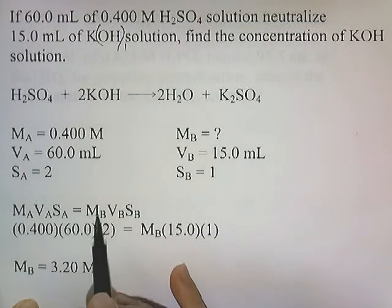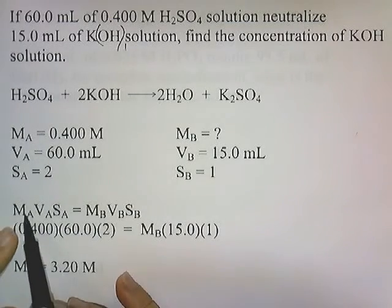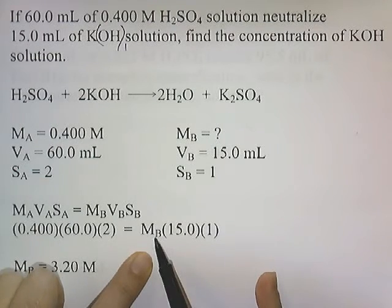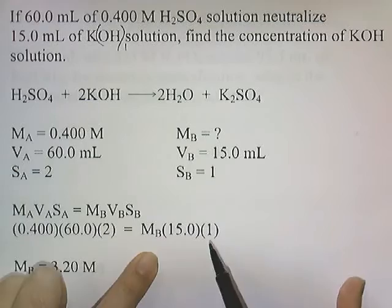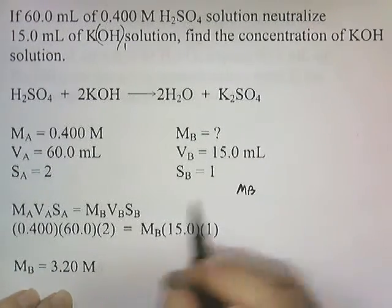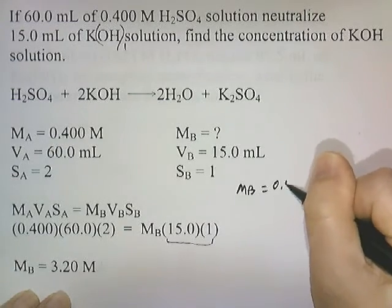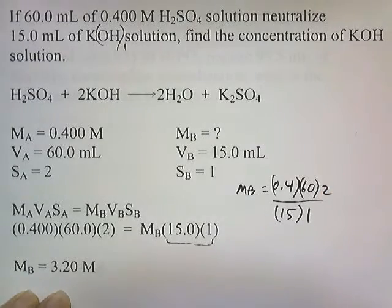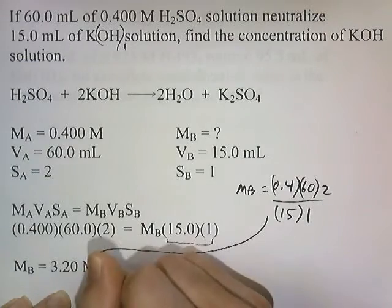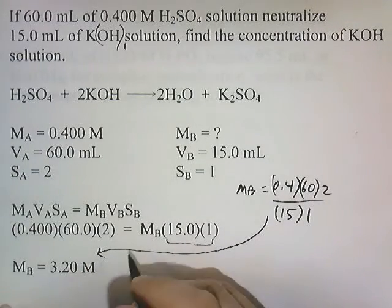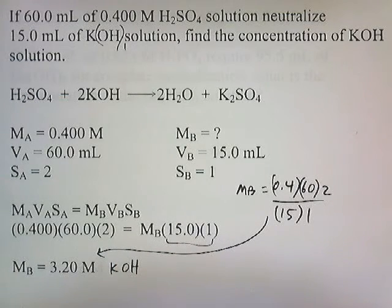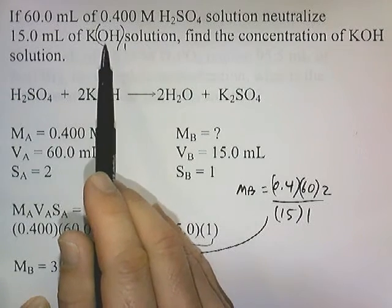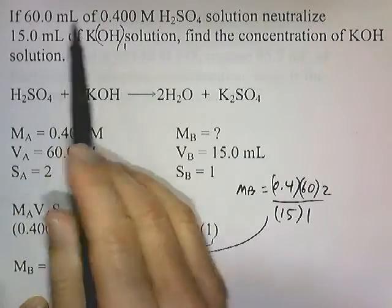Our formula is MA×VA×SA = MB×VB×SB. Filling in: MA is 0.4, VA is 60, SA is 2, VB is 15, SB is 1. Solving for MB: MB equals 0.4 times 60 times 2 divided by 15 times 1, which gives 3.20 molar KOH. That means the KOH must be 3.2 molar in order to neutralize that volume of acid at that concentration.